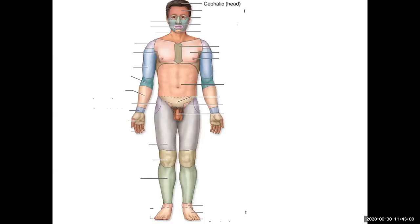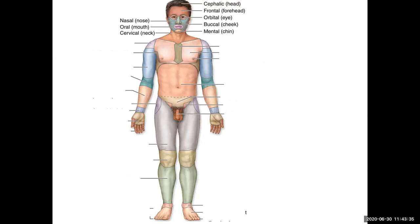Let's start with cephalic, or head. Moving to the areas of the face, we have the ocular, the nasal, the oral, the buccal, and the mental. We then get to the neck, which is the cervical. As we're going through these, start pointing to the areas so you actually have a point of reference for what's going on.